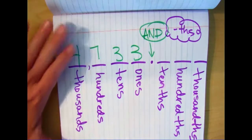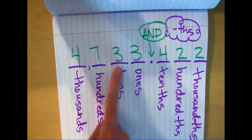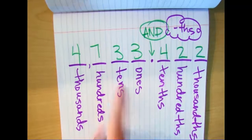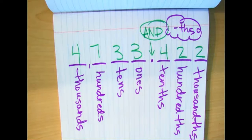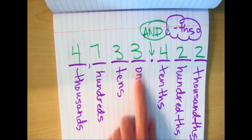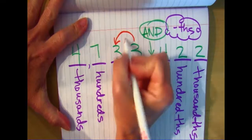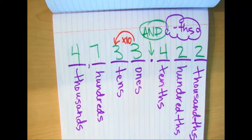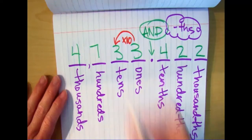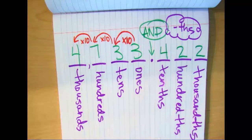What's the value of this three I'm pointing to? It's the tens place — so the three is worth thirty, or three tens. Is it the same value as this other three? No — it's ten times bigger. When digits are to the left, they're increasing times ten every time. Every place value spot you move to the left is ten times the one you were previously at — from tens to hundreds, or hundreds to thousands.